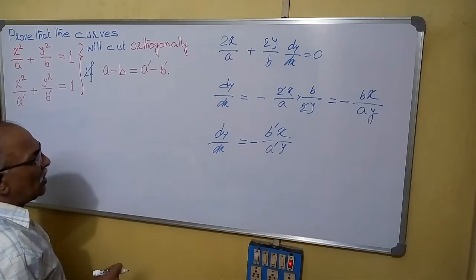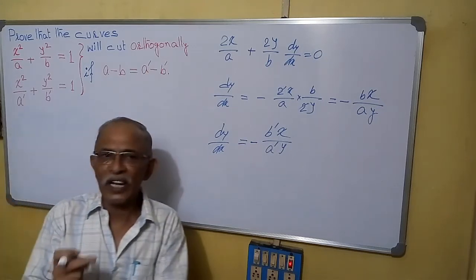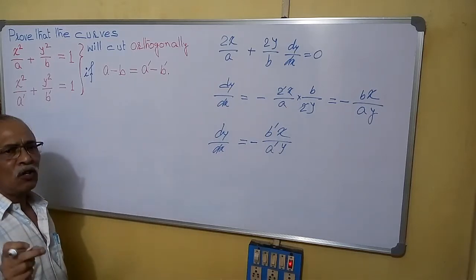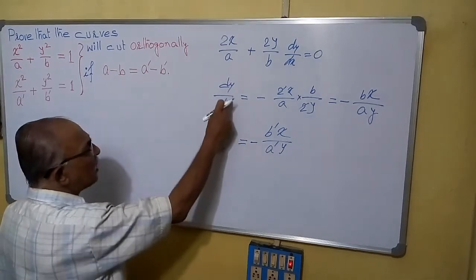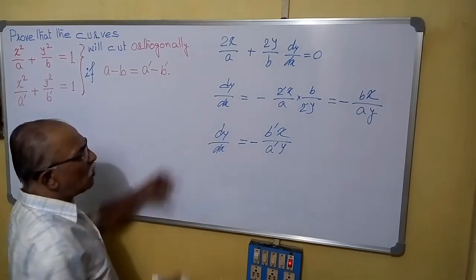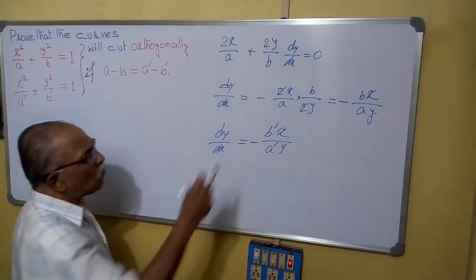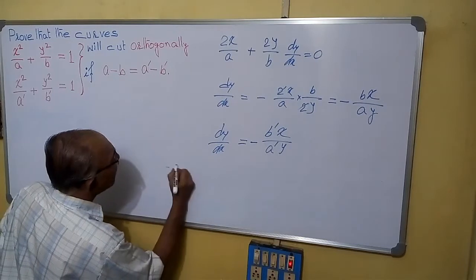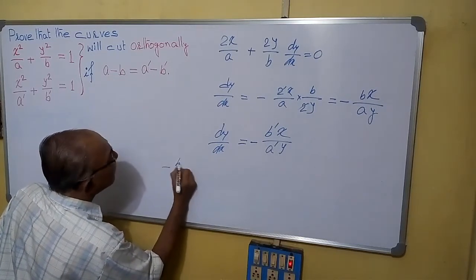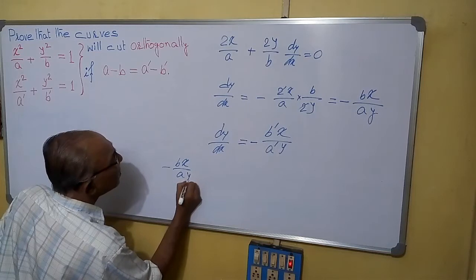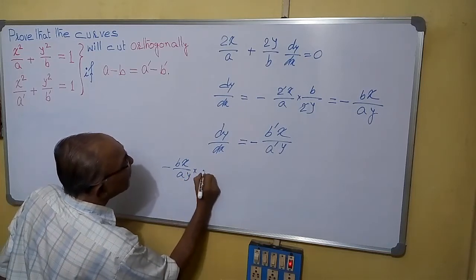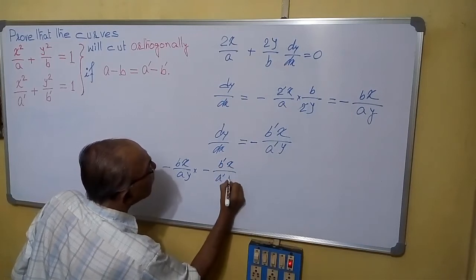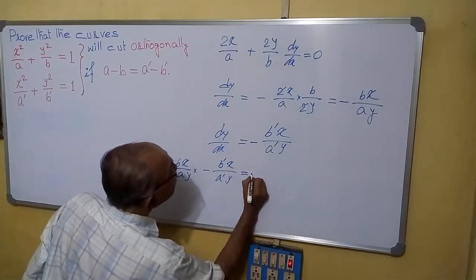Now, if these curves are cutting orthogonally, that means they are cutting at the same point and the tangents will be perpendicular to each other. If perpendicular, dy/dx represents slope, and the product of their slopes will be minus 1. That means minus Bx by Ay into minus B dash x by A dash y equals to minus 1.